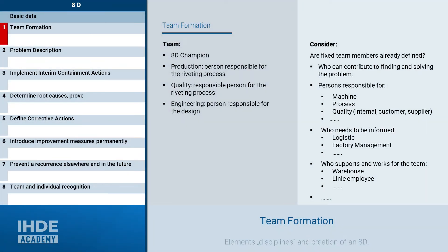Creating an 8D is always a team effort. It can make sense to have a firmly defined basic team which is supported by other experts if necessary. The question is who can contribute to finding and solving the problem — these can come from different areas of the company. Other responsible persons must also be informed about the complaint and the start of the 8D. For our case study, the team consists of an 8D champion, a person from production technically responsible for the riveting process, another person responsible for quality control, and someone from engineering familiar with the design of the product.